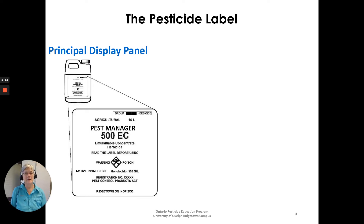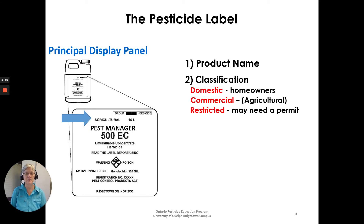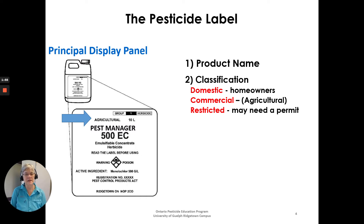A pesticide has a principal display panel and a secondary display panel. Starting with the principal display panel: the product name should be front and center — in this case it's Pest Manager 500 EC. Classification will be near the product name; in this case the federal classification is agriculture. You may also see domestic, commercial, industrial, institutional, or restricted classifications. A restricted product indicates additional precautions may be needed, such as a permit.